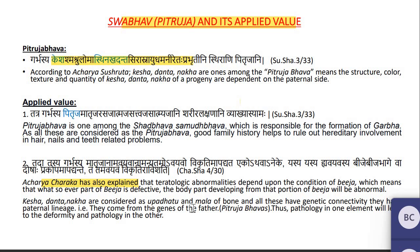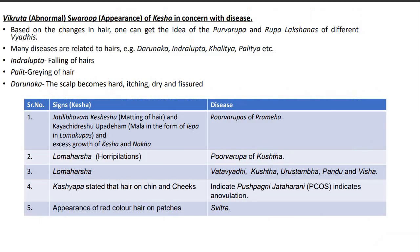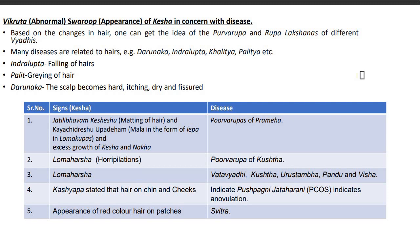Coming to the third subtopic: Prakrut and Vikrut — Abnormal Swaroop — of Kesh, Dant, and Nakha in concern with disease. According to Ayurveda, Prakrut relation is threefold because of predominance of Prakruti — Vata, Pitta, and Kapha Prakruti are different from each other. The Vata Prakruti's features of Kesh include matting of hair, excessive growth of Kesh and Nakha, and Lohm Harsha. If you know the Prakruti in the first place, it will be helpful in early diagnosis of any disease.